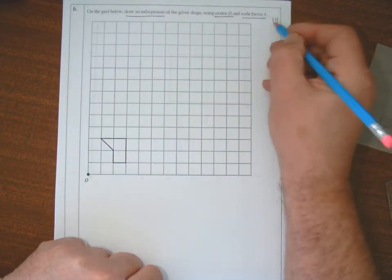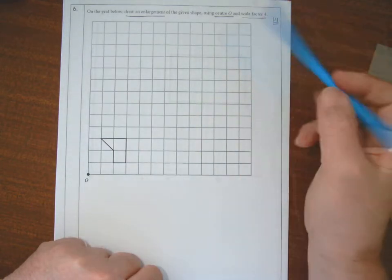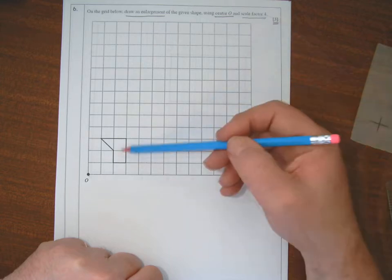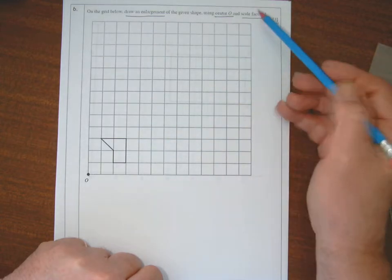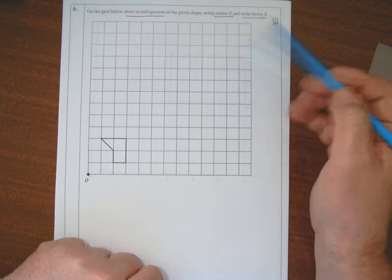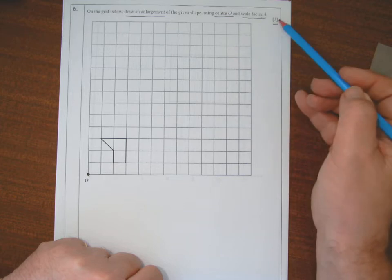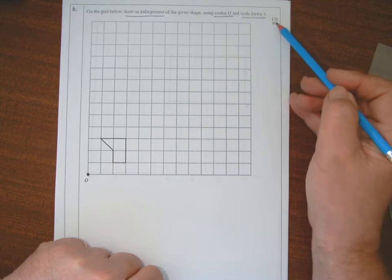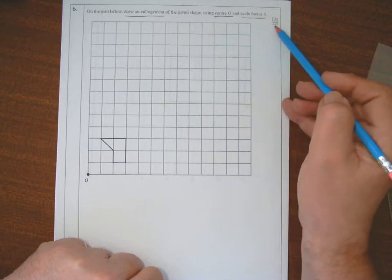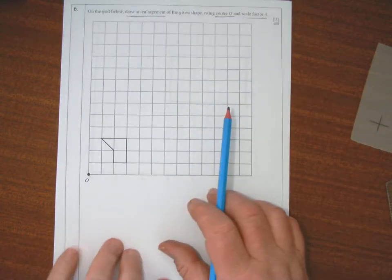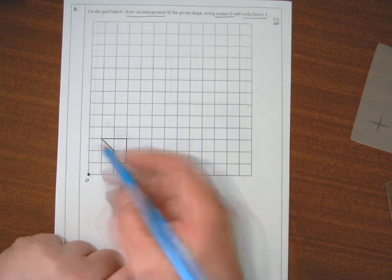You'll notice here there's three marks. The reason is, if I draw that shape four times bigger anywhere on that grid, I'll get two out of three. The only way I can get three out of three is if I draw it in the correct position.